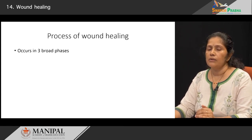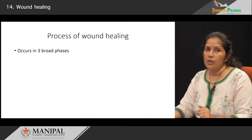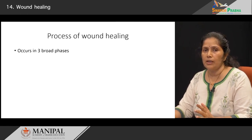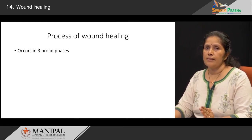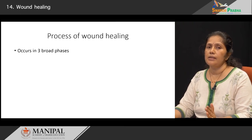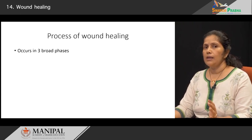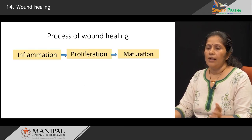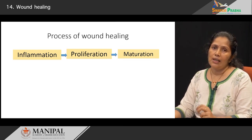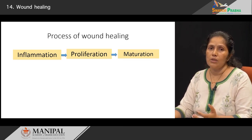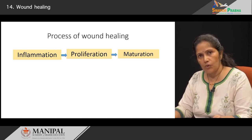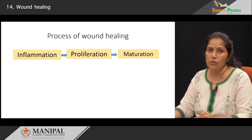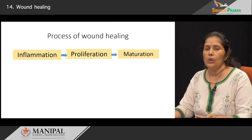Wound healing occurs in three broad phases, and please remember that there are no watertight compartments, so each one does not exist as a separate entity — it may spill into the next phase. These three broad phases are: inflammation, followed by cellular proliferation, and then finally maturation of the tissue so that it looks more like normal.